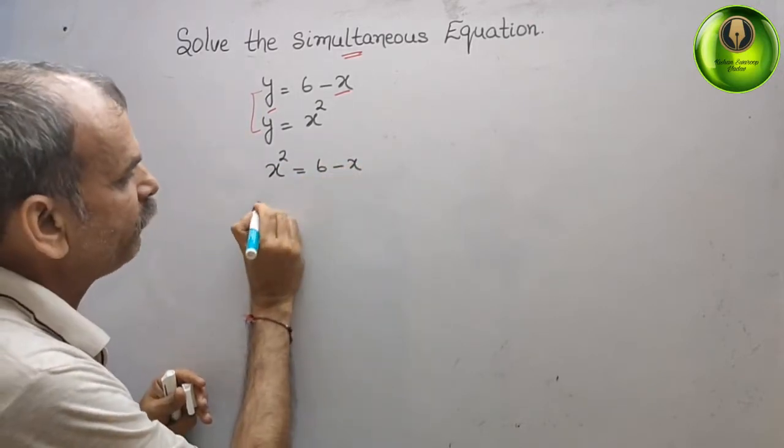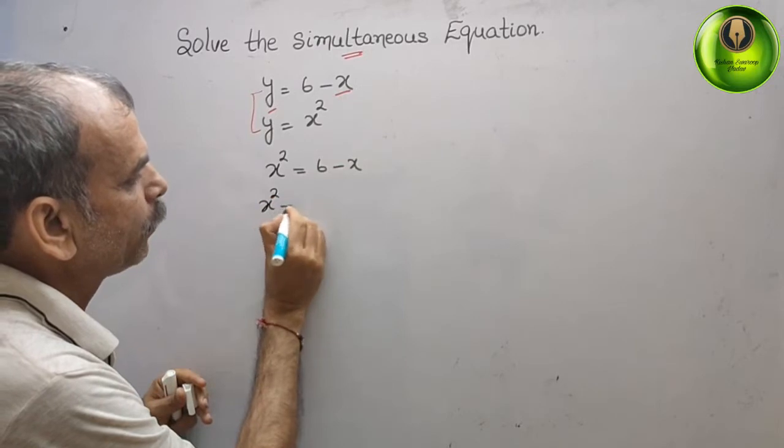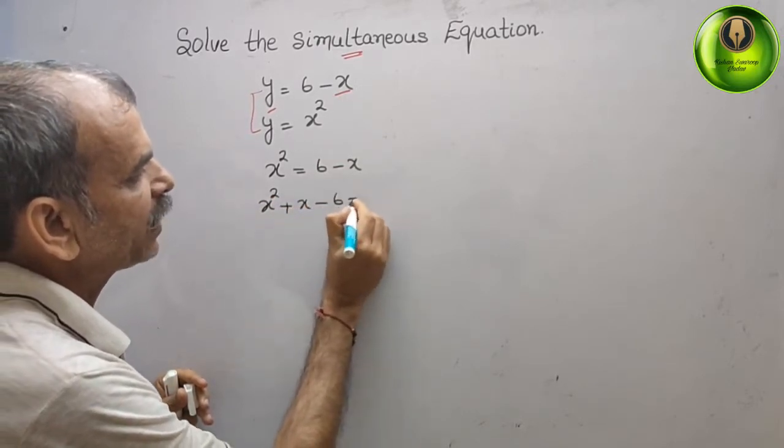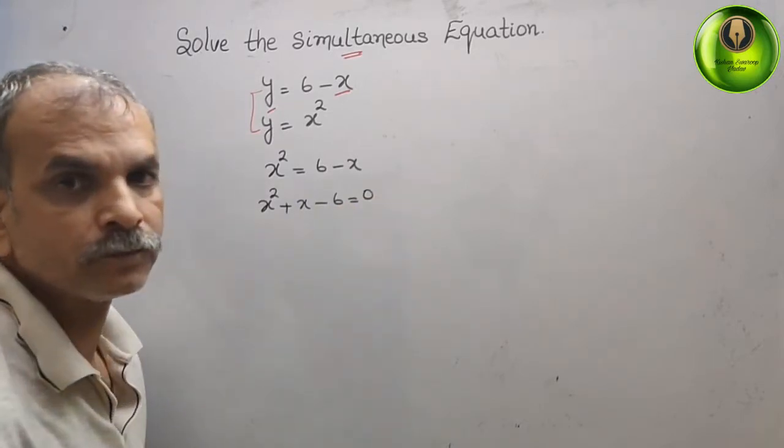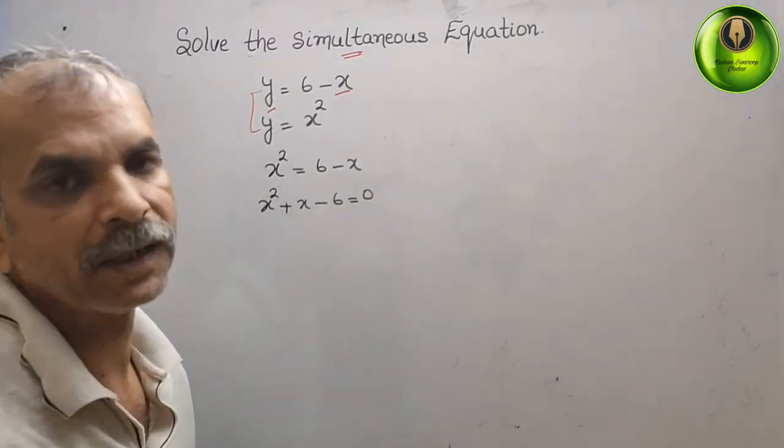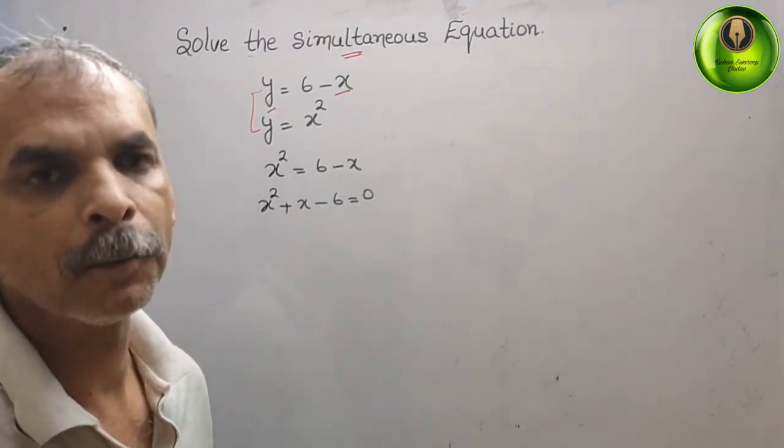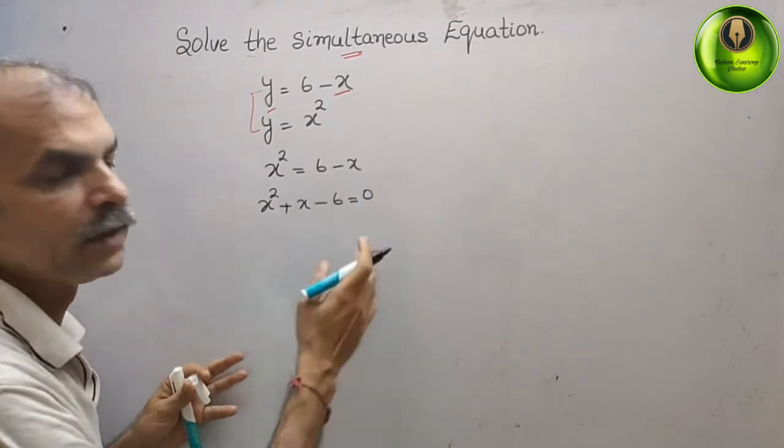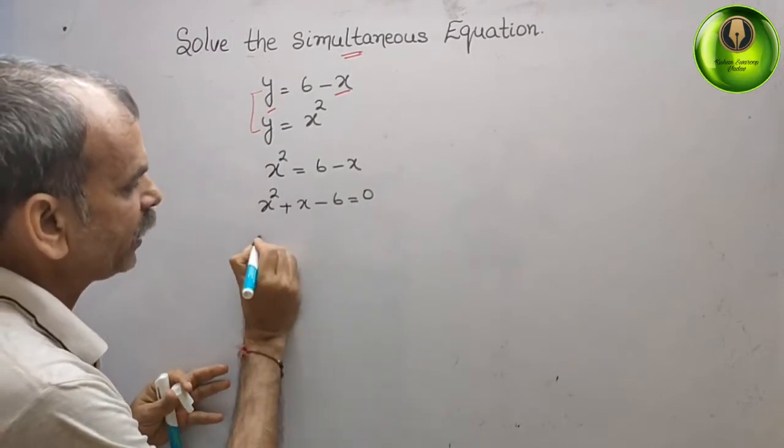Now go for middle term splitting or any other formula whatever suits here. We can see yes it's going, so we will write here x square + 3x - 2x - 6 = 0.